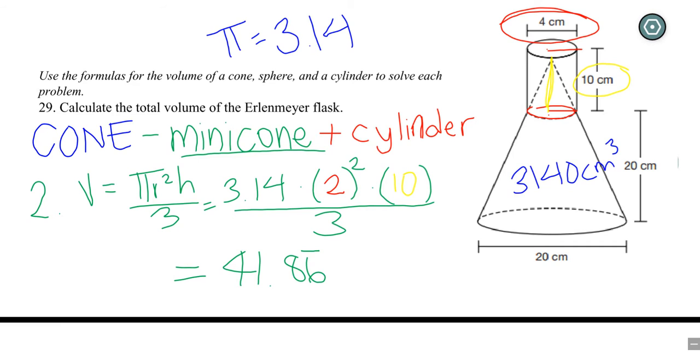We get 41.86 repeated. Now don't forget you're supposed to round this. And we round to the second decimal place, the hundredths place. So our final answer is going to be 41.87 cubic centimeters. There you go. There's the minicone. Go ahead and pause this and make sure you have it copied down. Otherwise I'm going to erase this and move on.